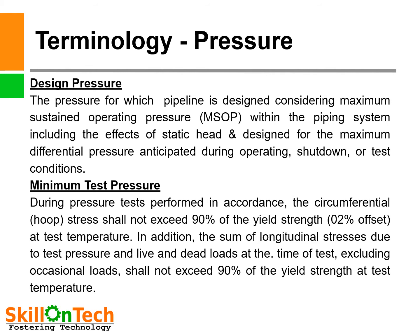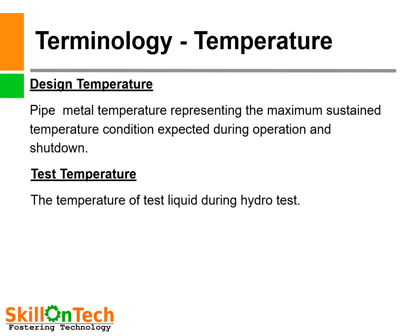In addition, the sum of longitudinal stresses due to test pressure and live and dead loads at the time of test, excluding occasional loads, shall not exceed 90% of the yield strength at test temperature. This strength is of the material. Design temperature is the pipe metal temperature representing the maximum sustained condition of temperature expected during operation. Test temperature is the temperature of the test liquid during hydrotest of the pipeline.